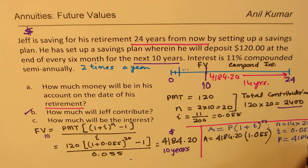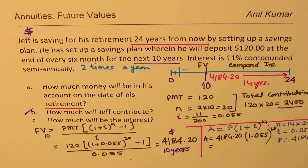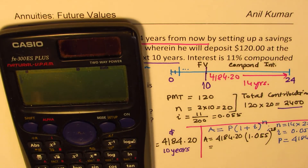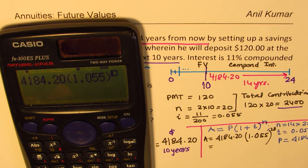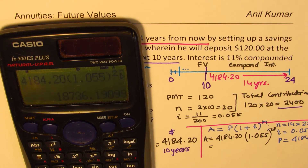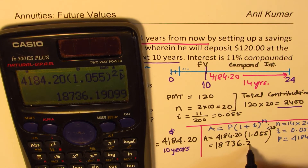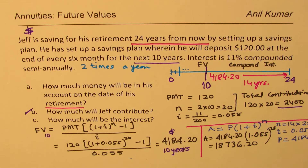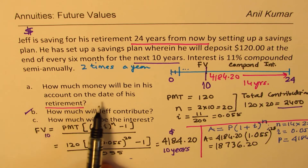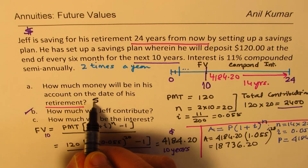Plugging in the values: 4,184.20 × (1.055)^28, where the exponent is 14 years times 2, giving 28. That calculation yields $18,736.20, which is the total amount in the account at the time of retirement.